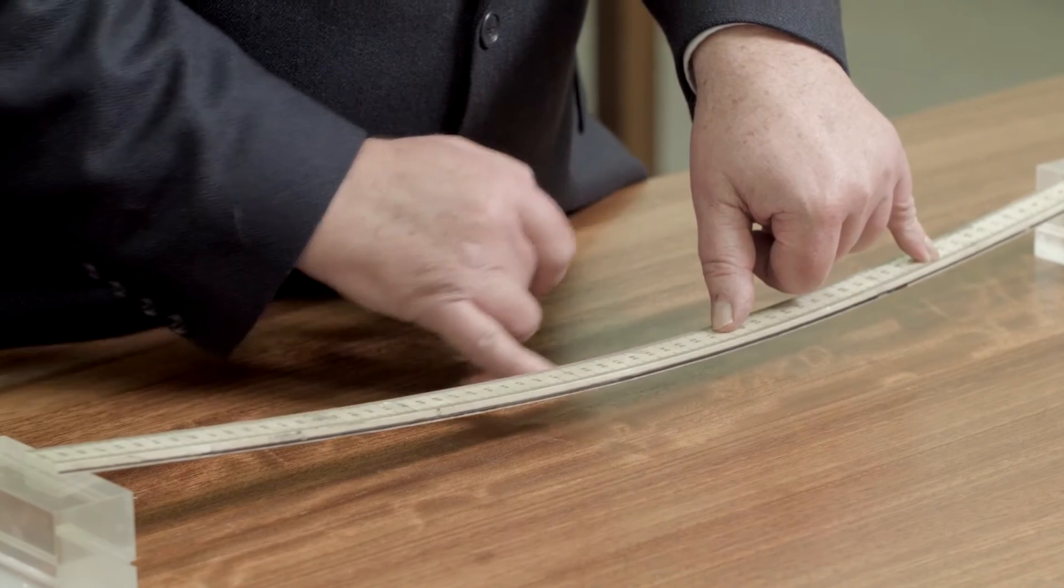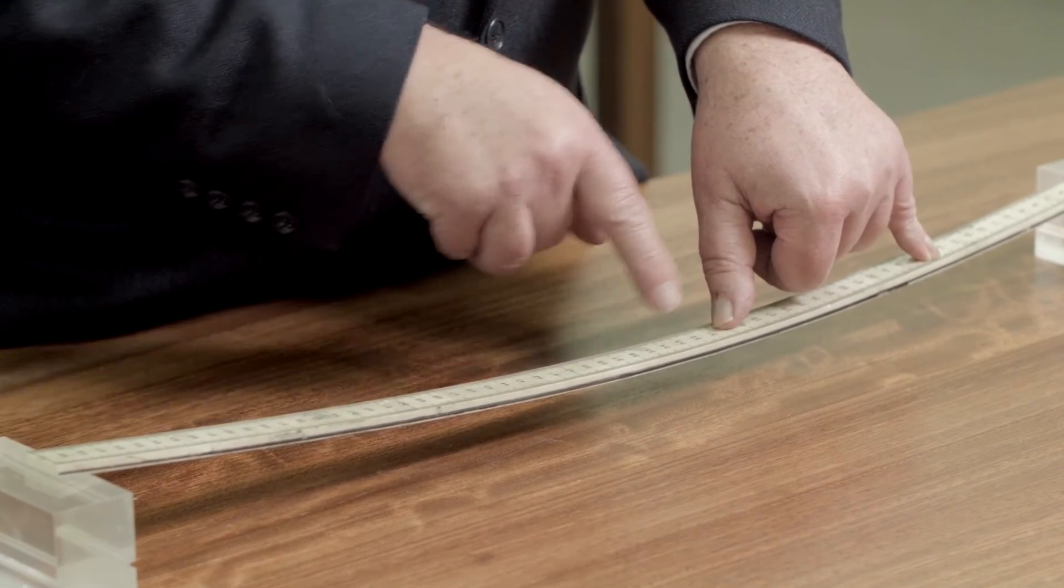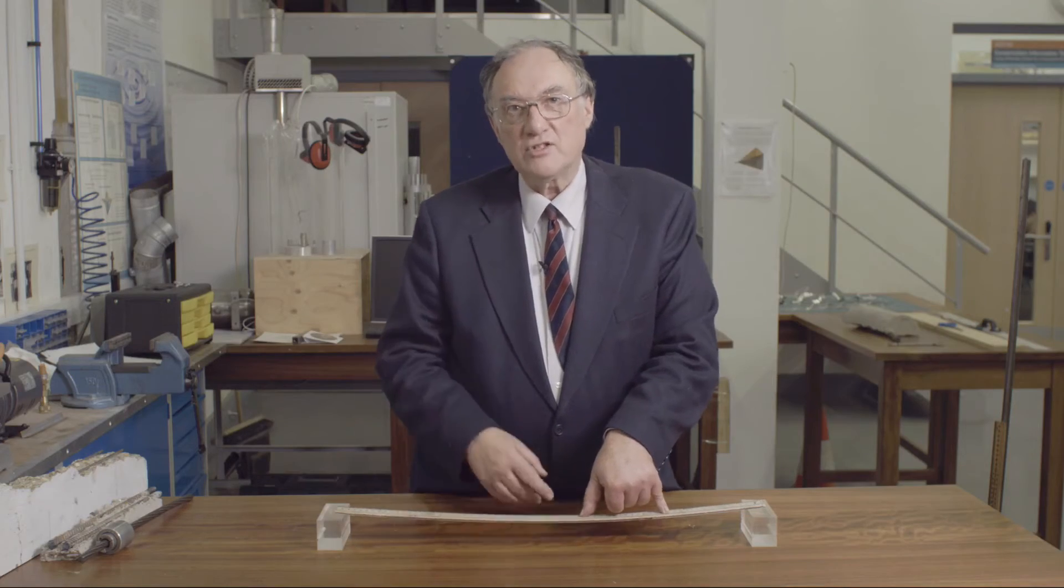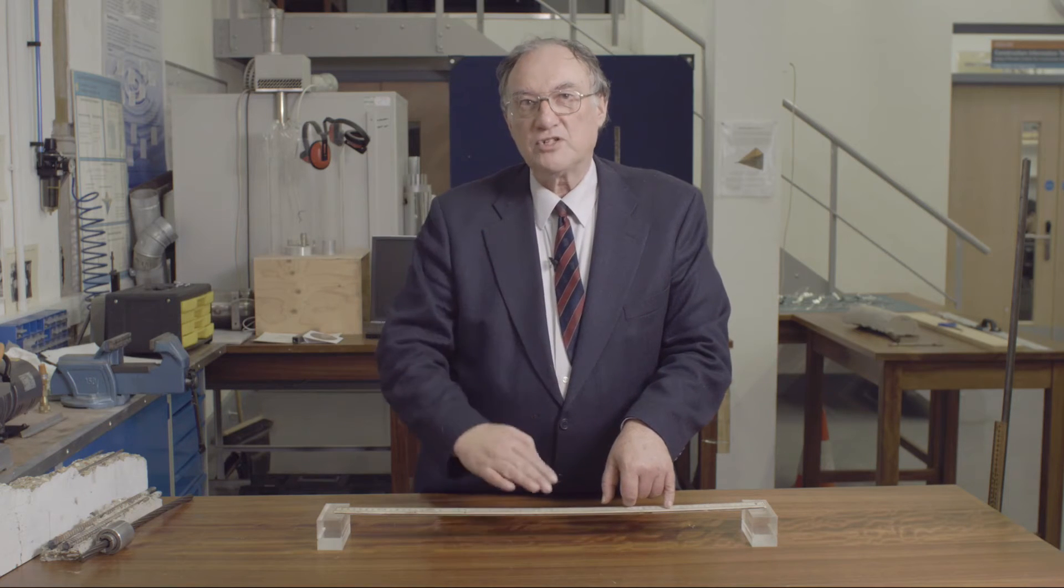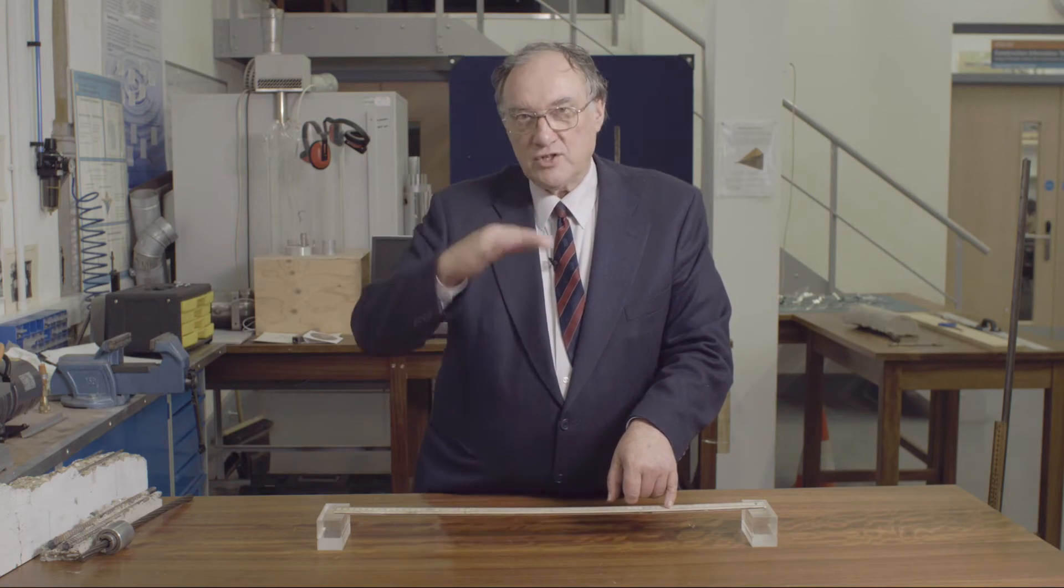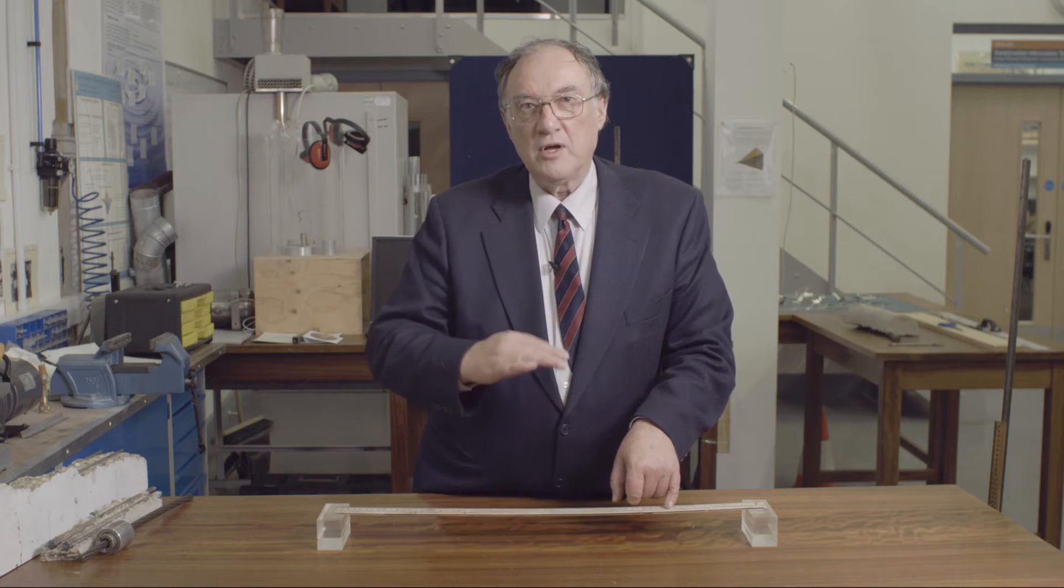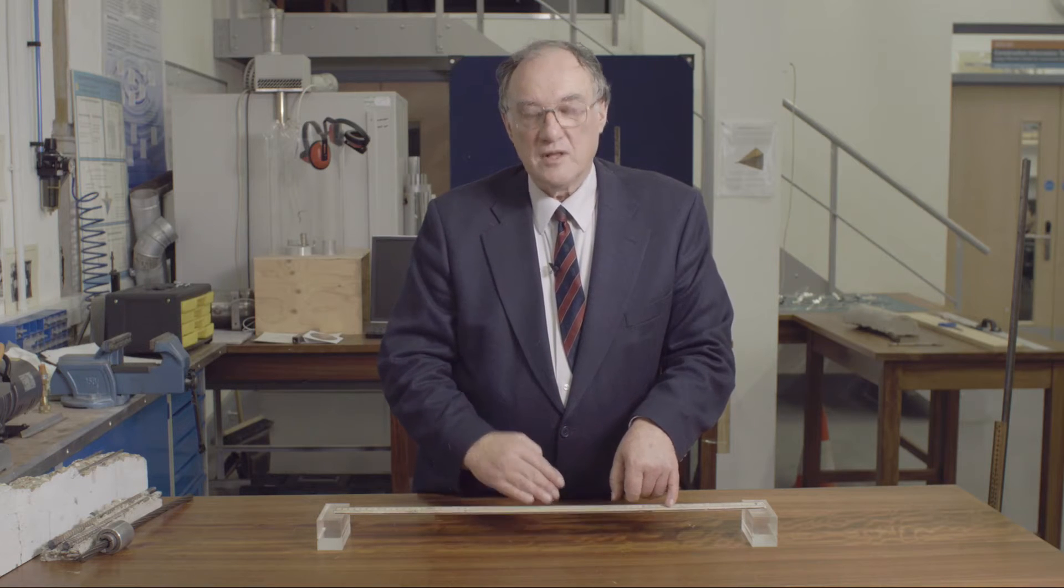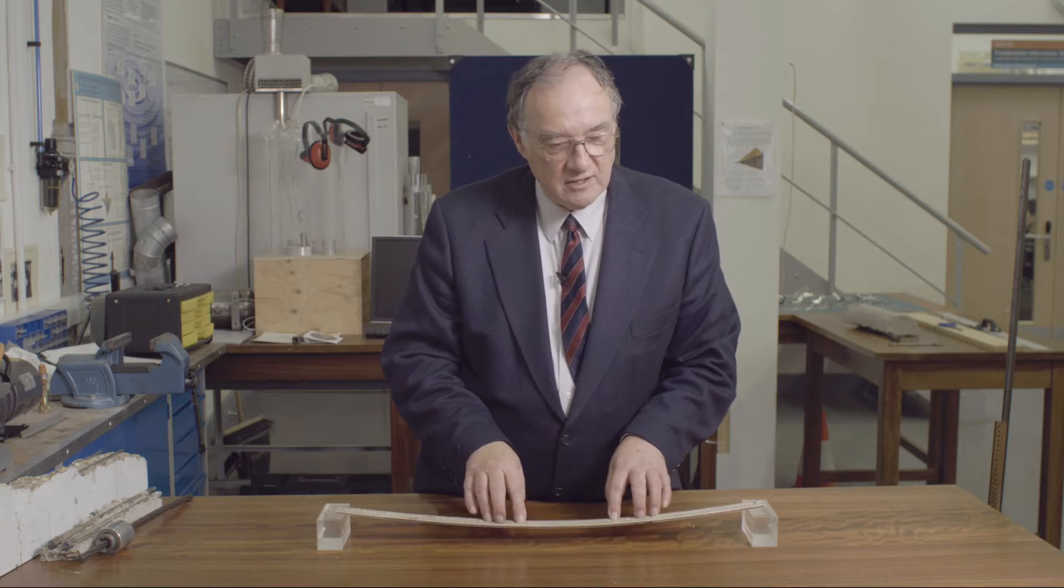And we get tensile stresses at the bottom and compressive stresses at the top. And we've already seen that under those circumstances, the ideal position for the pre-stressing cable is two-thirds of the way from the top to the bottom of the beam. This is what we call sagging bending for fairly obvious reasons.